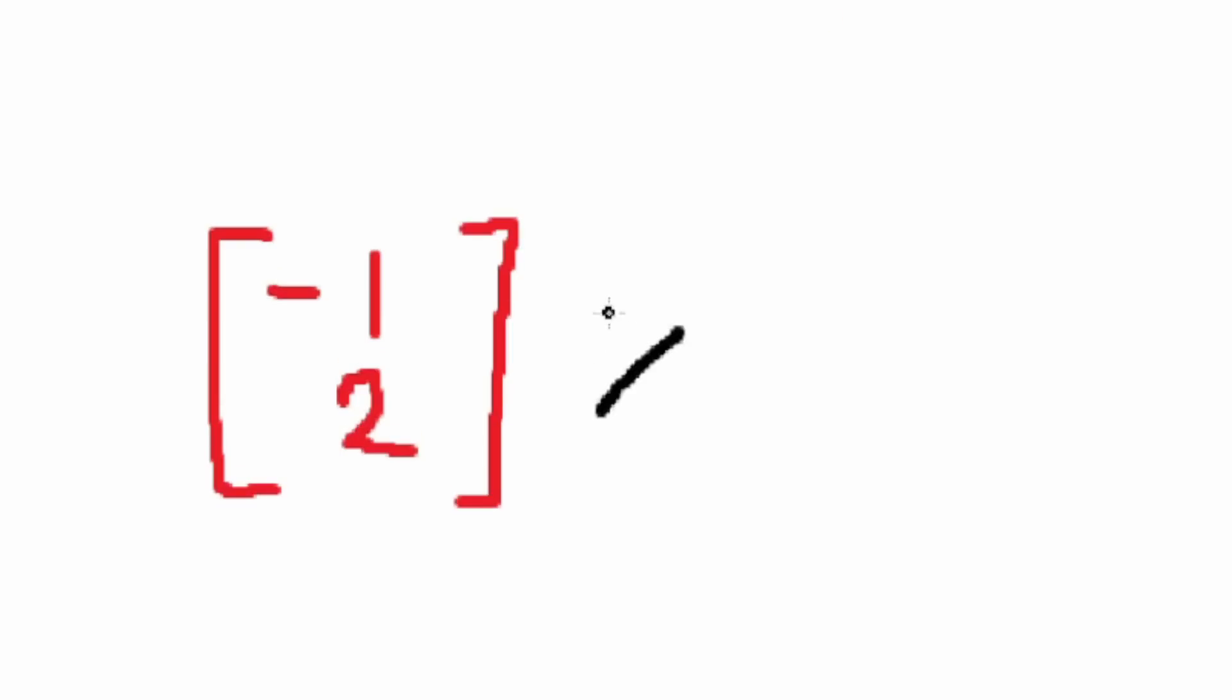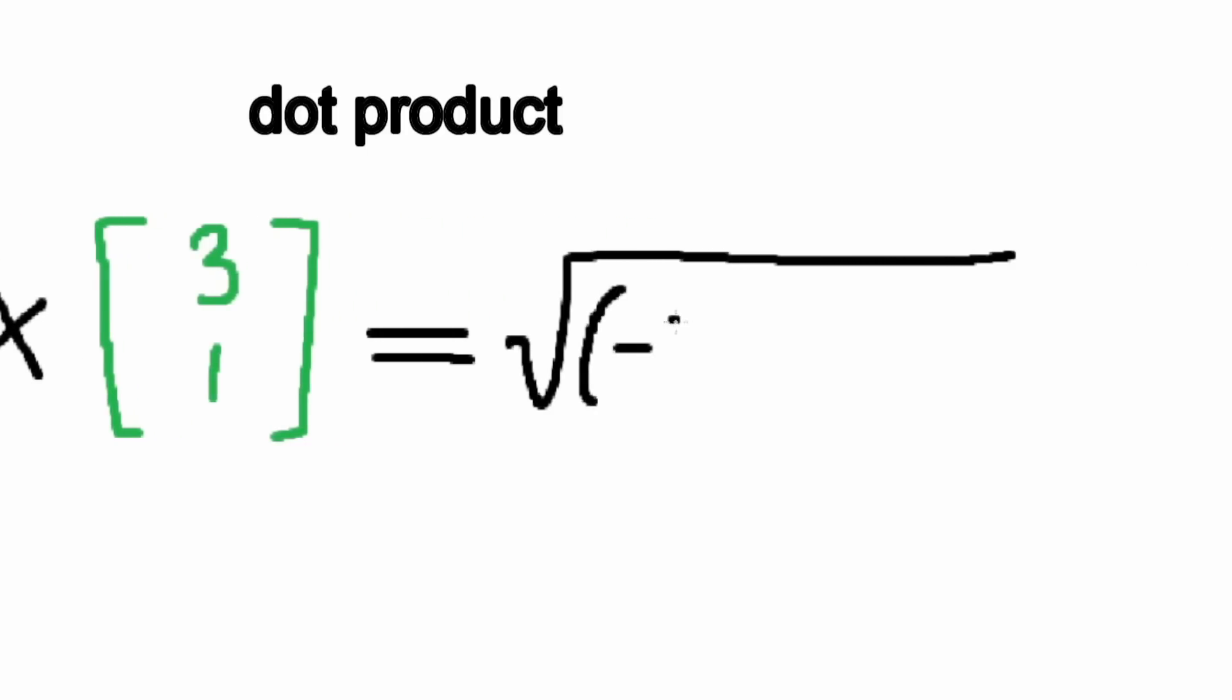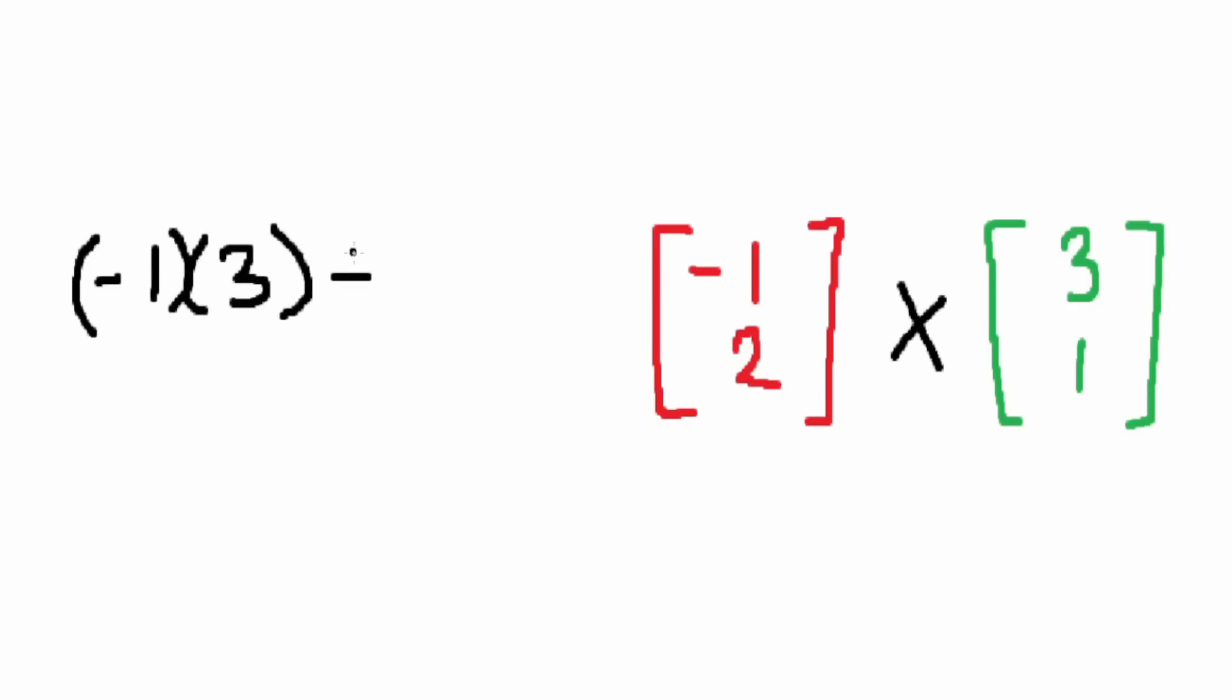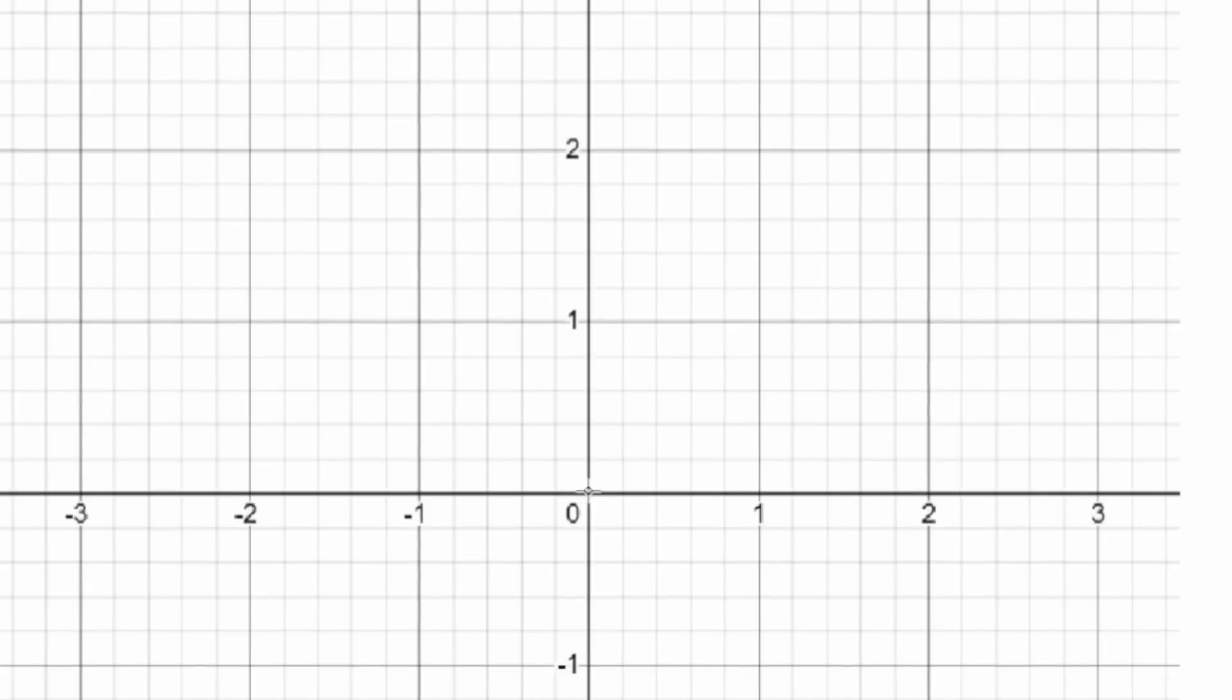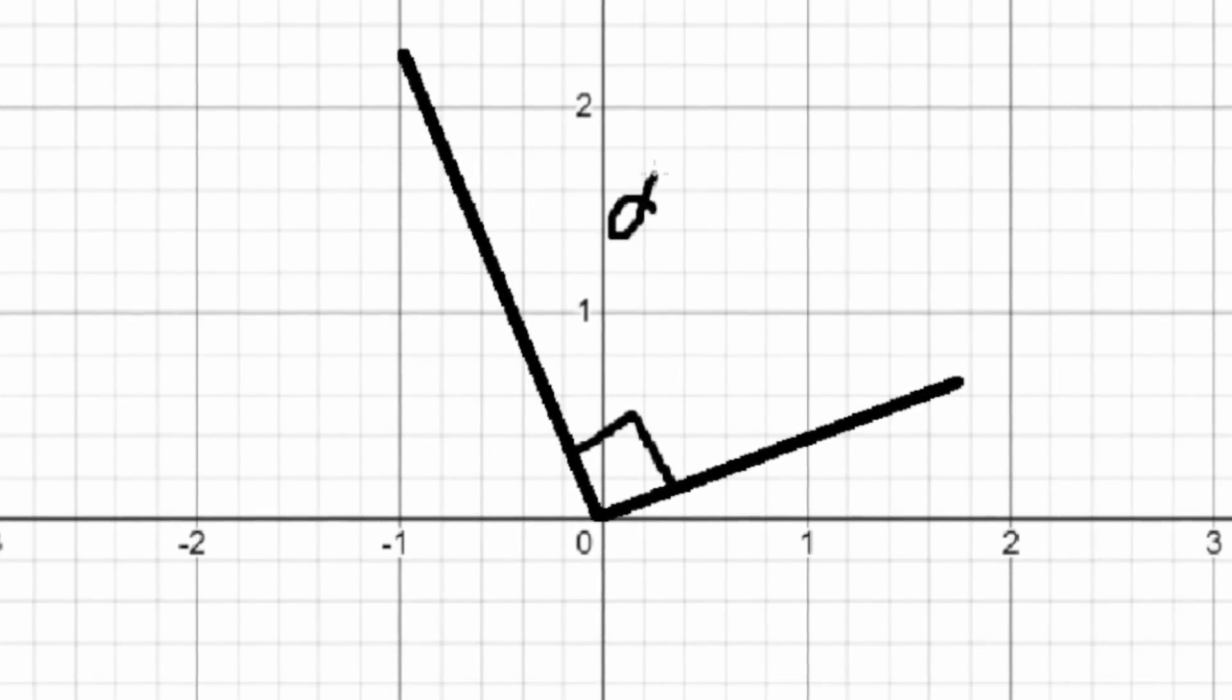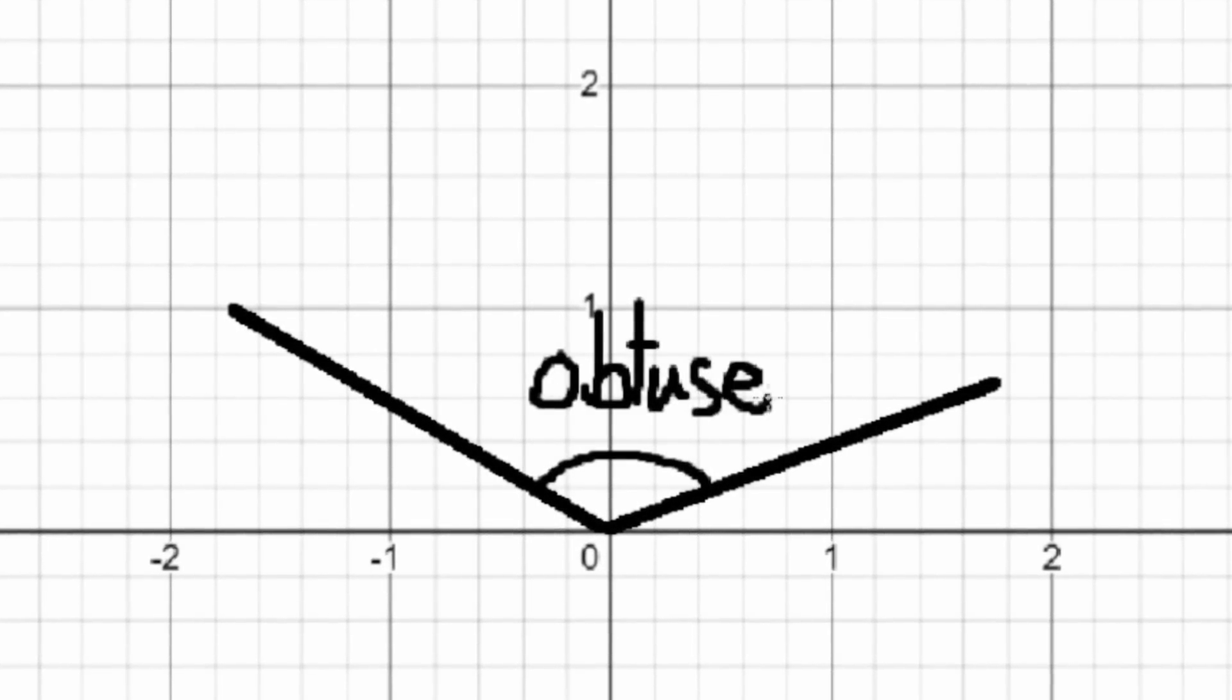The way to do this is by multiplying them, because the dot product of the vectors is equal to the product of the magnitudes, times by the cos of the angle. What is a dot product? Literally just multiply the rows and add the products. An angle is acute if the dot product is greater than zero, 90 degrees if it's equal to zero, and obtuse if it's less than zero.